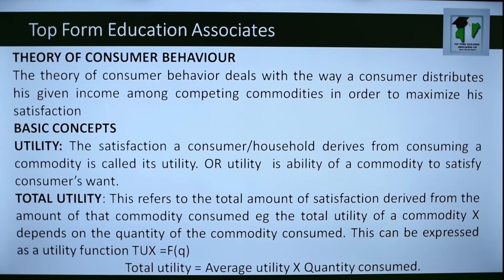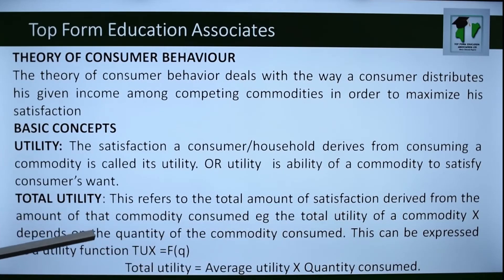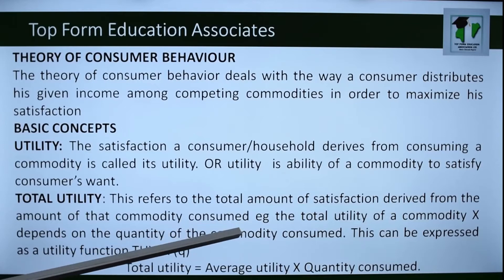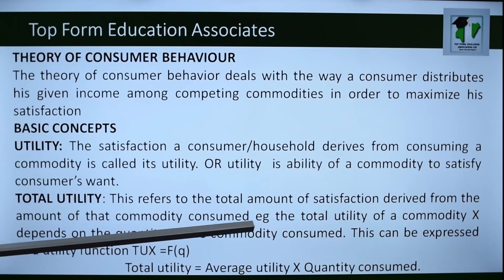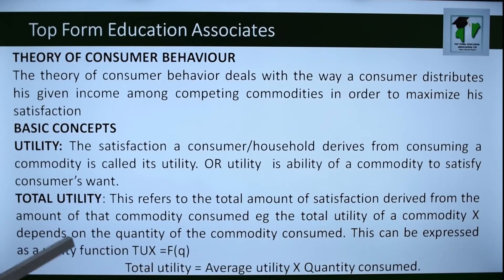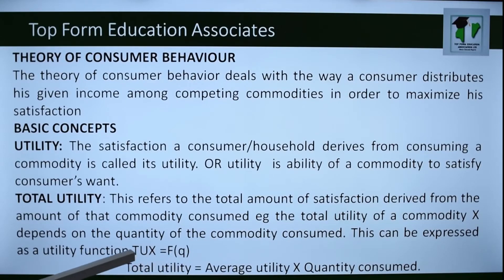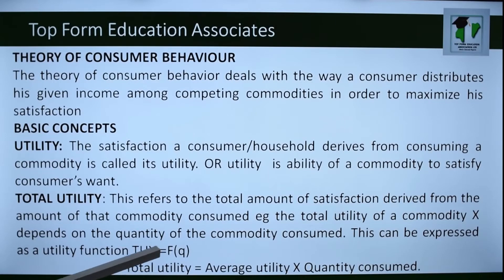Total utility refers to the total amount of satisfaction derived from the amount of a commodity consumed. The total utility of commodity X depends on the quantity consumed, expressed as a utility function: TUx is a function of Q. Total utility is calculated as average utility multiplied by quantity consumed.